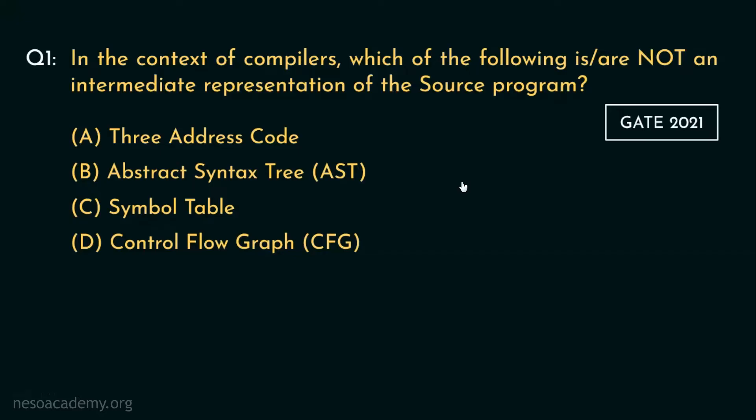Now intermediate code in reality can be of two different forms: the linear form and the tree form. The three address code, which we have briefly observed in the session on different phases of compiler, falls into the category of linear form. Now Abstract Syntax Tree is an intermediate code form which falls into the tree form category. The question here is asking us to find out the one which is not an intermediate representation of the source program. Hence we are not to choose these two.